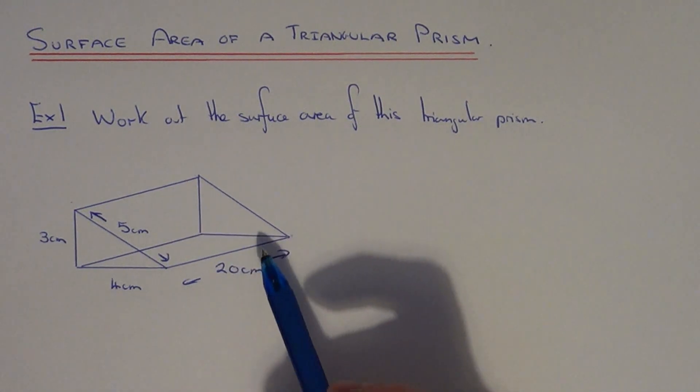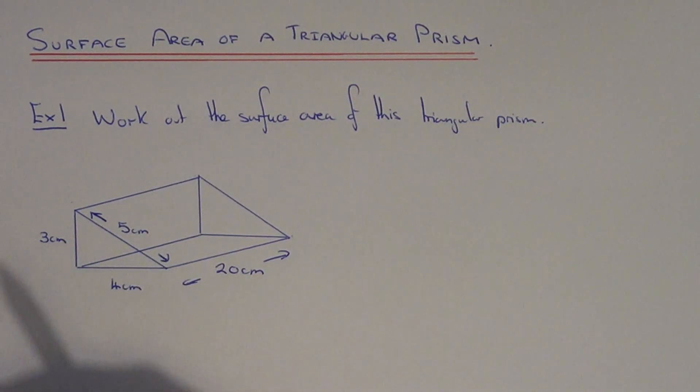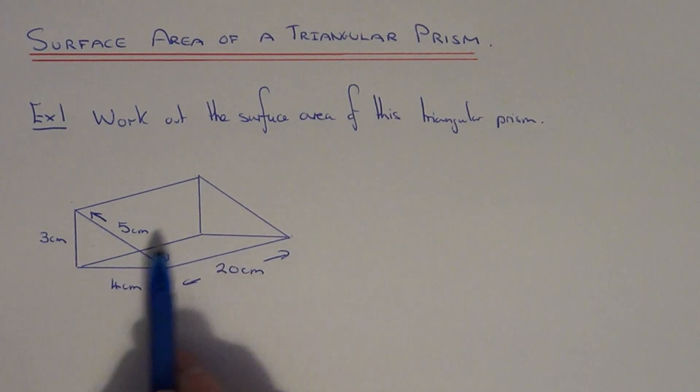So with a triangular prism we have five faces. We need to work out the area of all five faces and then add them together. Now two of the faces are triangles. So when you work these ones out we need to work out the area of a triangle which is base times height divided by 2.